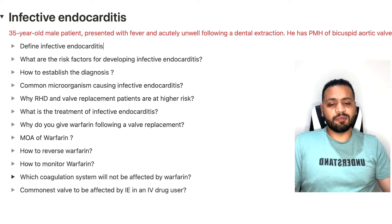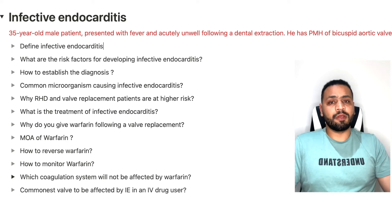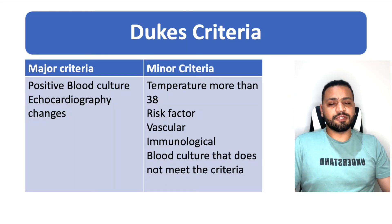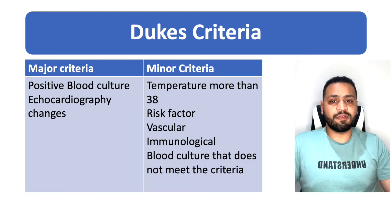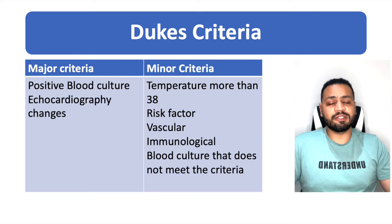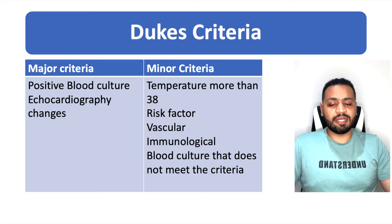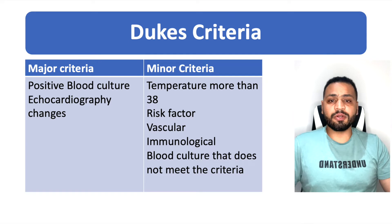The next question is about how to establish a diagnosis. Diagnosis is usually established through a criteria called Duke's criteria, and this is the time you will need to talk confidently about it. The criteria is divided into major and minor criteria. The major criteria is more definitive and covers two things: number one, blood culture, and number two, echocardiographic changes. With blood culture, two positive blood cultures from a patient you suspect of having infective endocarditis is definitive for the diagnosis.